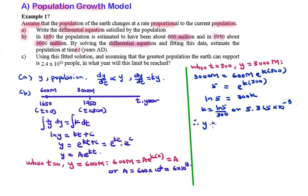Therefore, y is equal to 6×10^8 times e raised to the power of [ln(5)/300]·t.